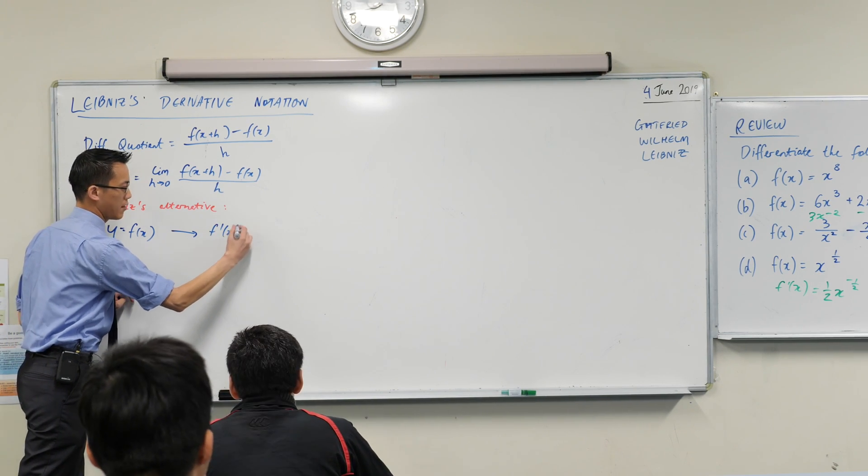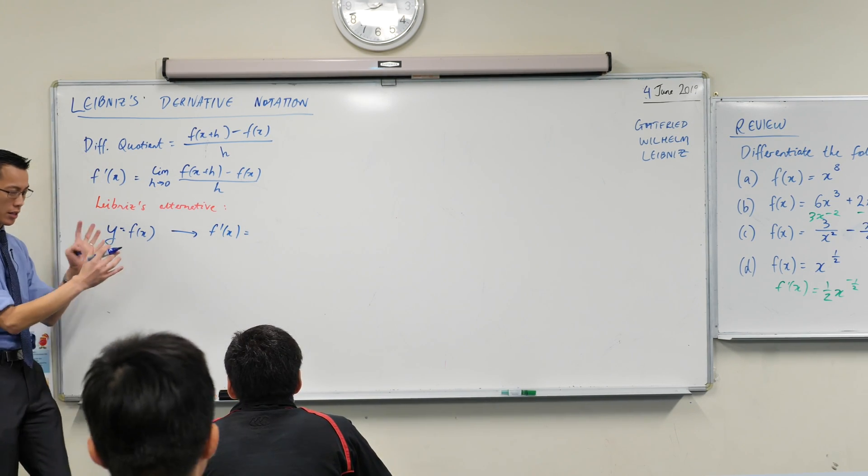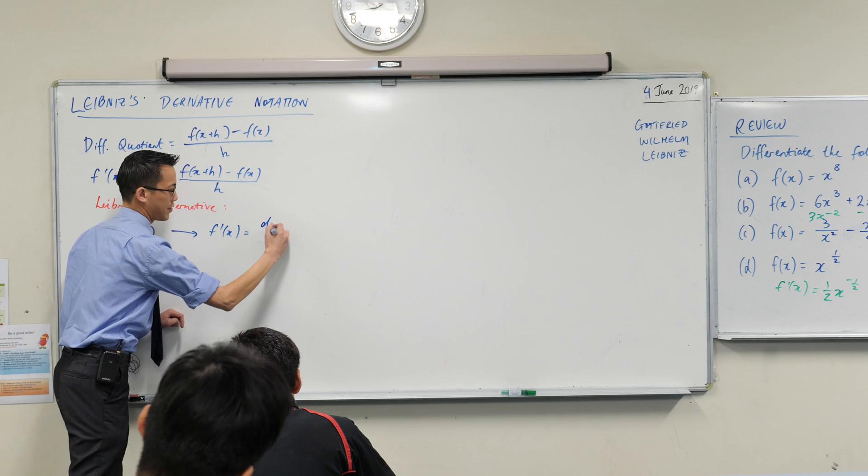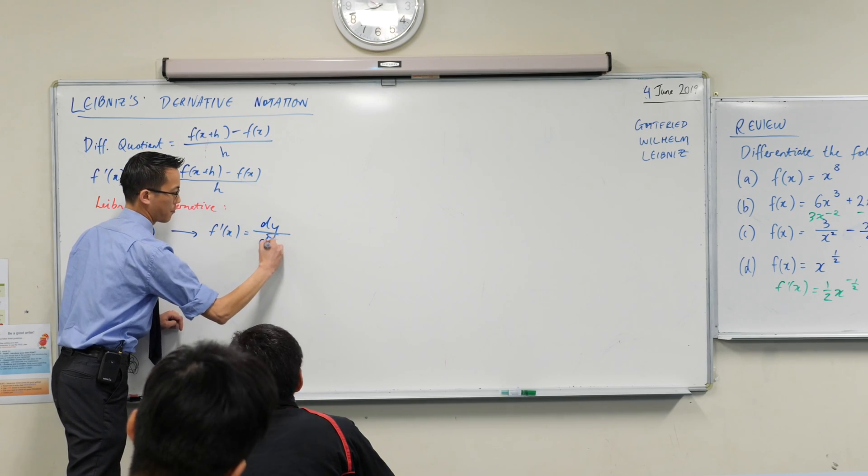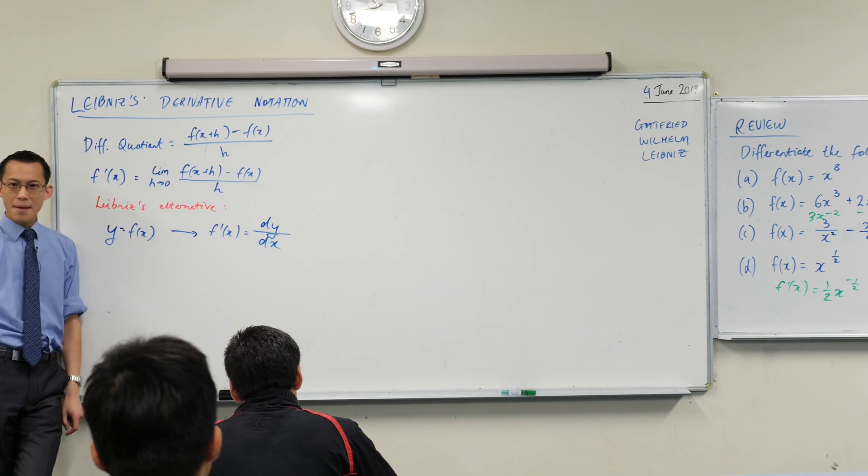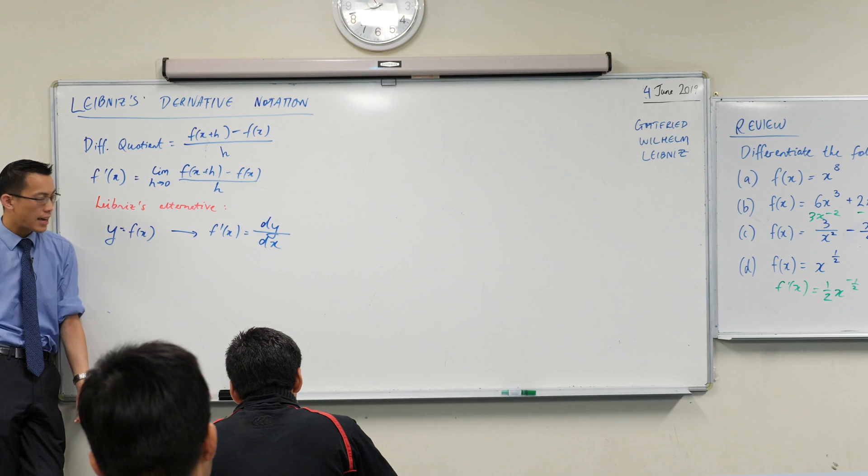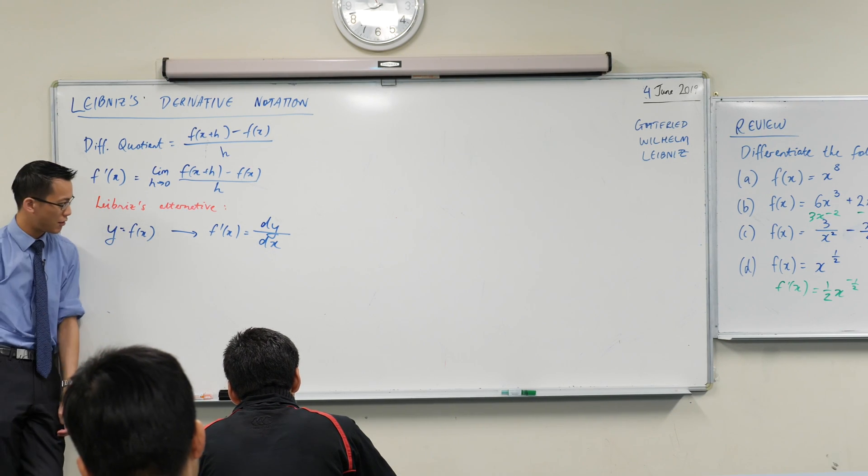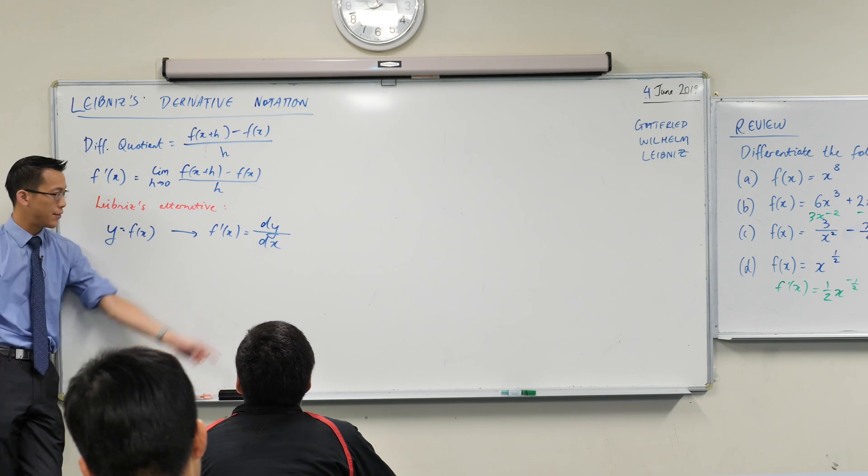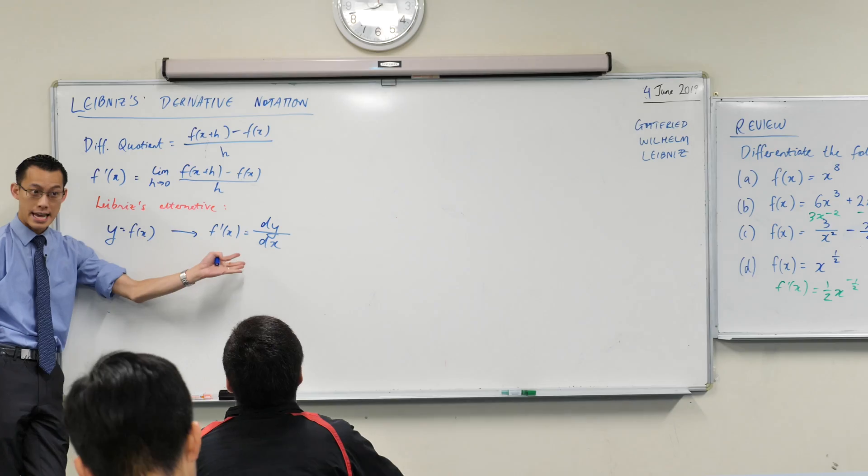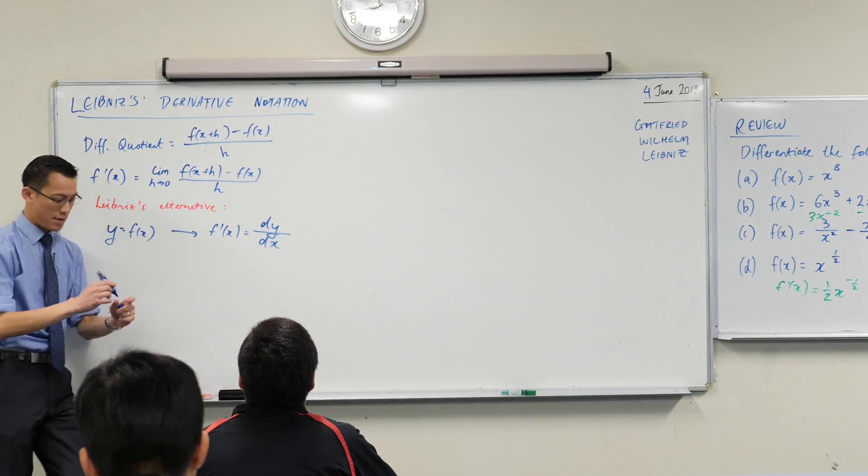We can say the derivative, I'm going to write it in this weird way. I'm going to explain it, right? And some of you might have seen this notation before. This is Leibniz's innovation, right? He said, I want to, instead of this dash notation and all that, I'm going to call the derivative dy on dx. Now, what does this mean? Let me explain.